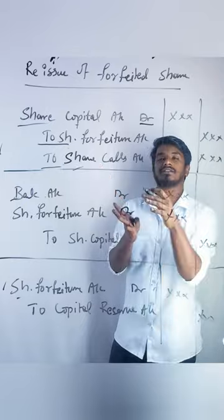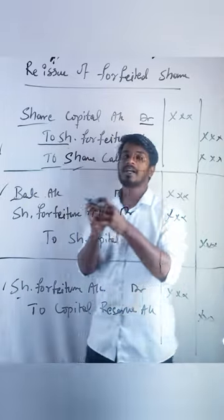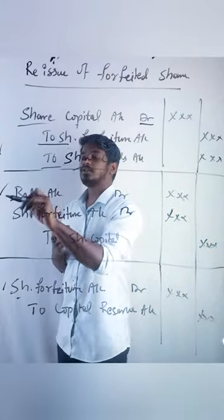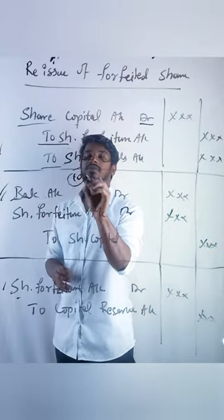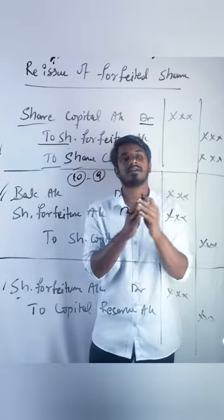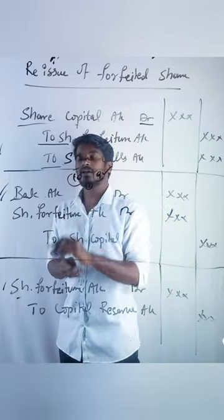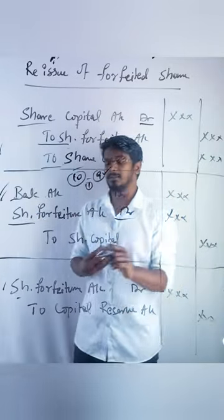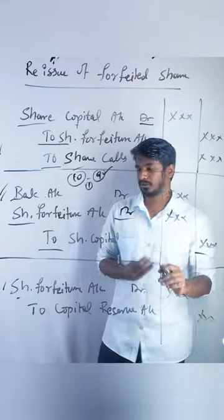Next, we will reissue at a lower price. For example, if the face value is 10 rupees and we are reissuing at 9 rupees, one rupee is being lost. So: Bank Account debit, and we take the 1 rupee shortfall from Share Forfeiture Account debit, credit to Share Capital.